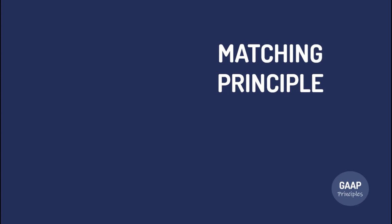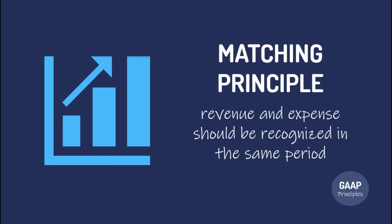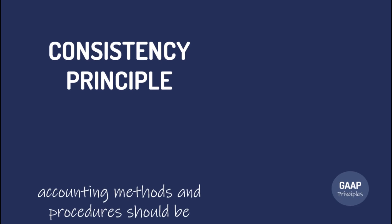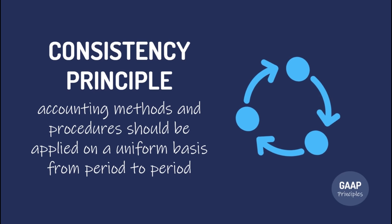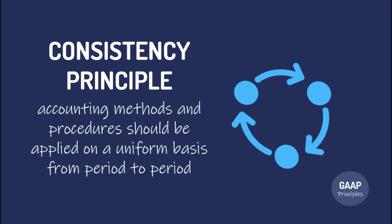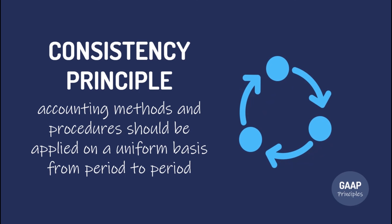Fourth, the Matching Principle. This requires that revenue and expense should be recognized in the same period. This means that if you are going to recognize a revenue for that period, you should also recognize the corresponding expense associated with it. So when you recognize sales revenue, you should also recognize the corresponding cost of sales. Fifth, the Persistency Principle. This means that accounting methods and procedures should be applied on a uniform basis from period to period. So if you are applying straight-line depreciation last year for your fixed assets, you should also use the same method this year.